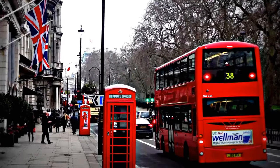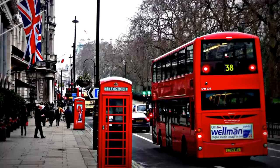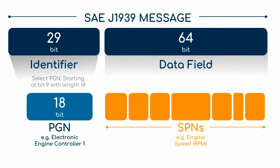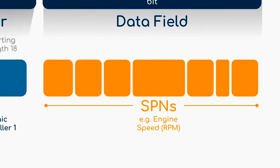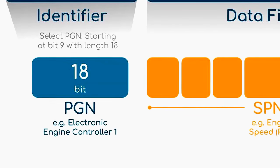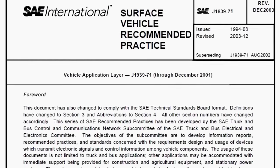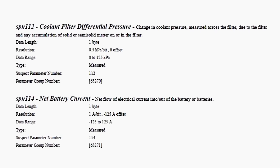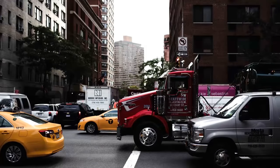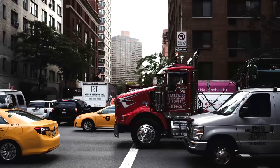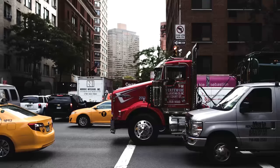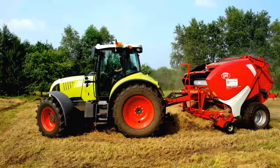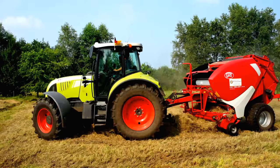SAE J1939 is the standard in-vehicle network for buses, trucks, and other heavy-duty vehicles. All J1939 messages rely on the extended 29-bit CAN identifier. J1939 data parameters — for example, RPM and vehicle speed — are identified by a Suspect Parameter Number (SPN), which are grouped into Parameter Group Numbers (PGN) containing one or more SPNs. With this standardized structure, CAN messages from buses and trucks can be decoded using parameter tables from the J1939 standard. Several standards are derived from J1939, including the Fleet Management System (FMS). For more information, see the simple intro to J1939 or the J1939 ID to PGN converter.